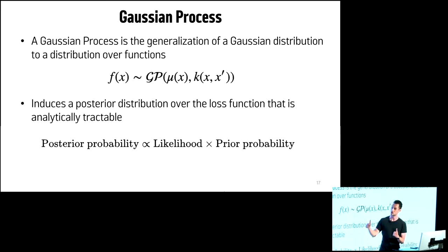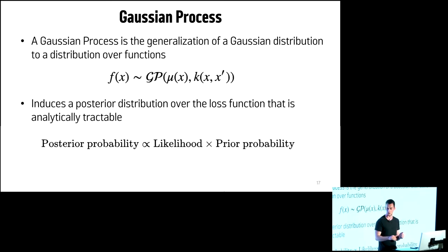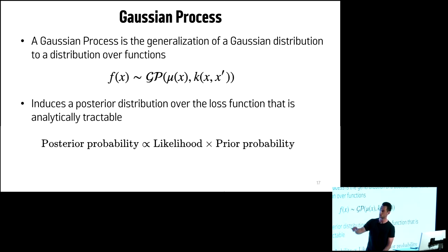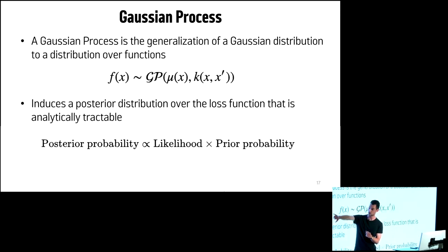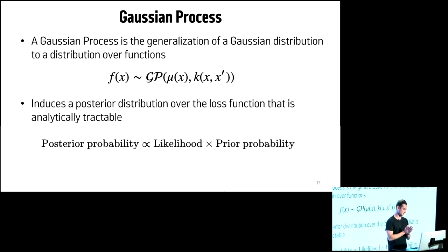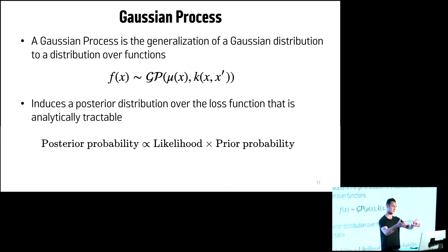A key concept is the Gaussian process — essentially a generalized version of the Gaussian distribution, but a distribution over functions. We assume our loss function is Gaussian process distributed with a mean function u(x) and a covariance function k(x, x'). This is also called the kernel or covariance function, and it describes the smoothness and properties of our loss function. Importantly, it induces a posterior distribution that's analytically tractable, meaning each time we can update what we've previously seen and leverage our historical data.